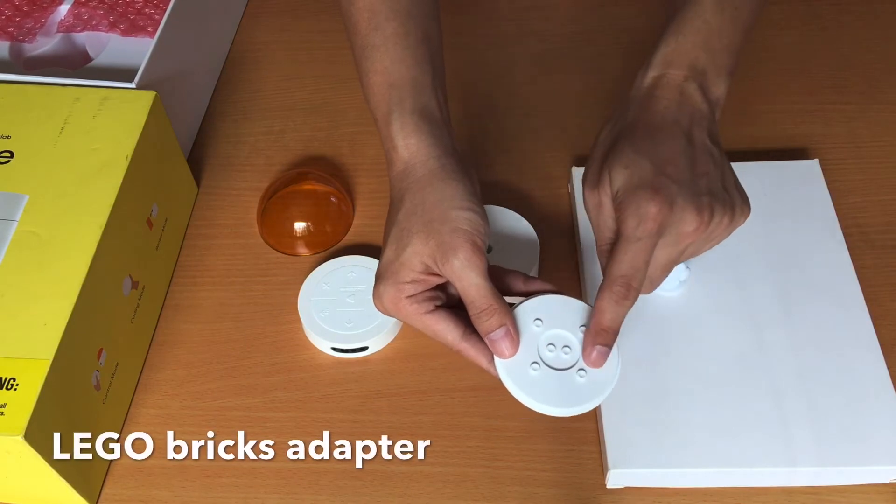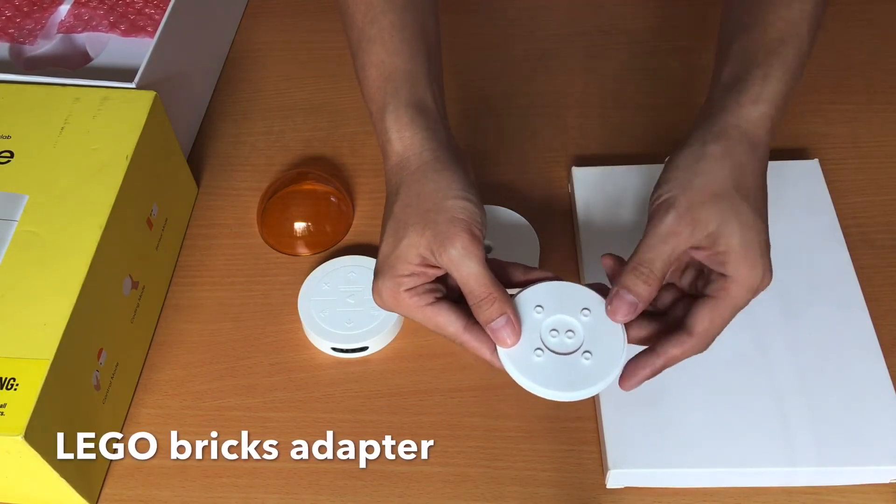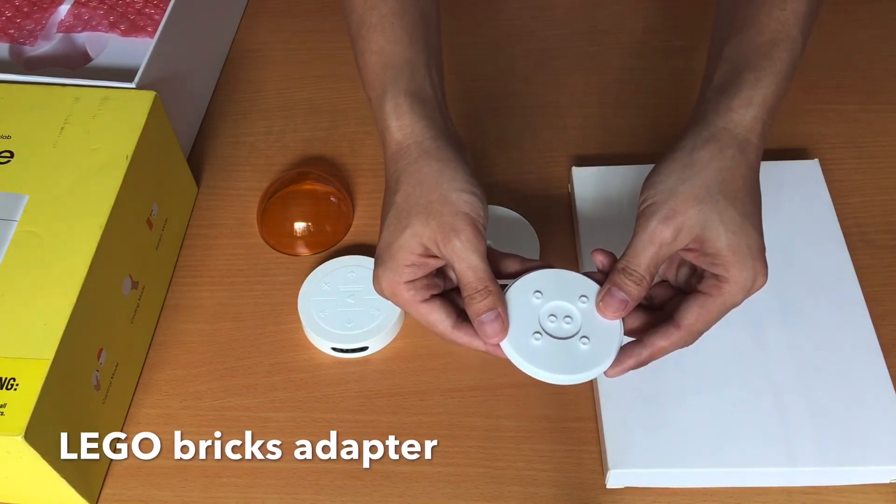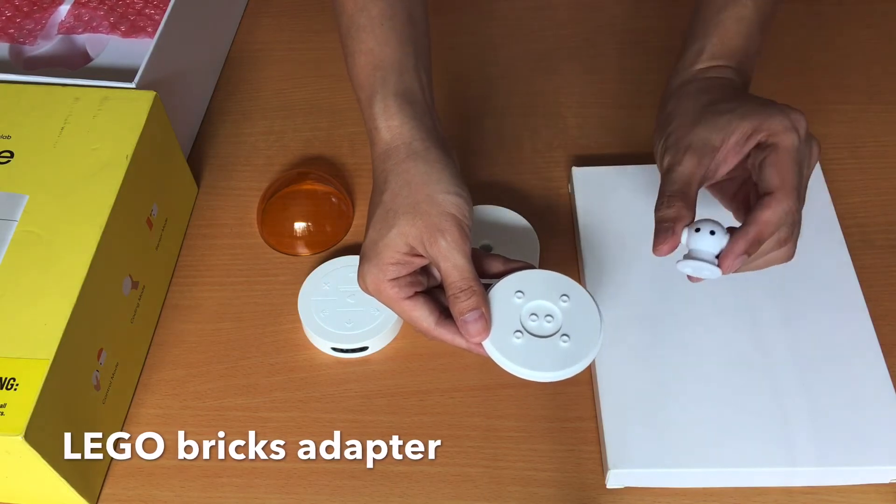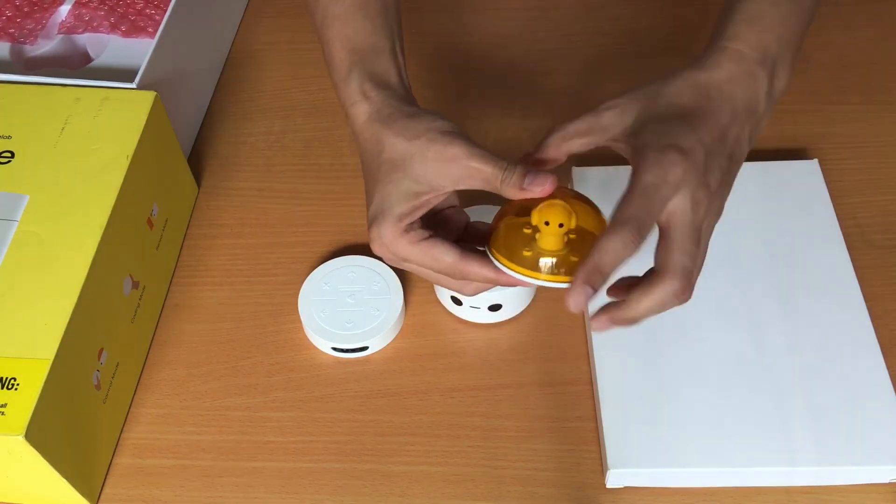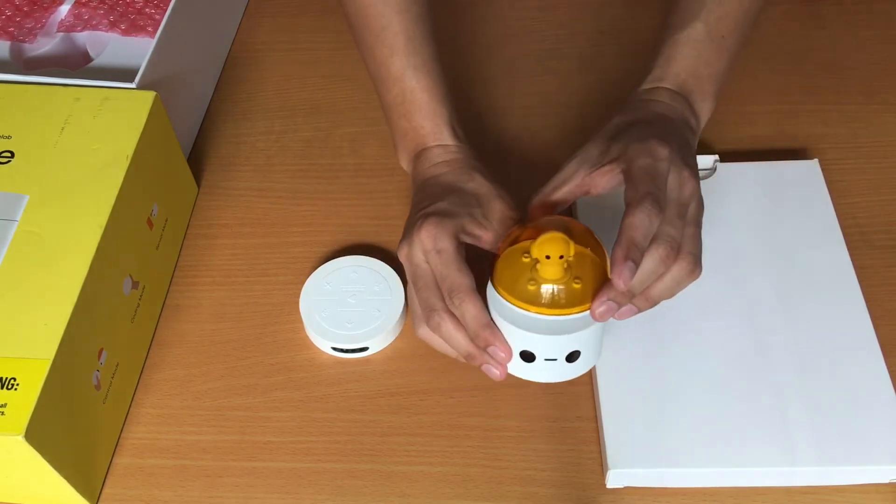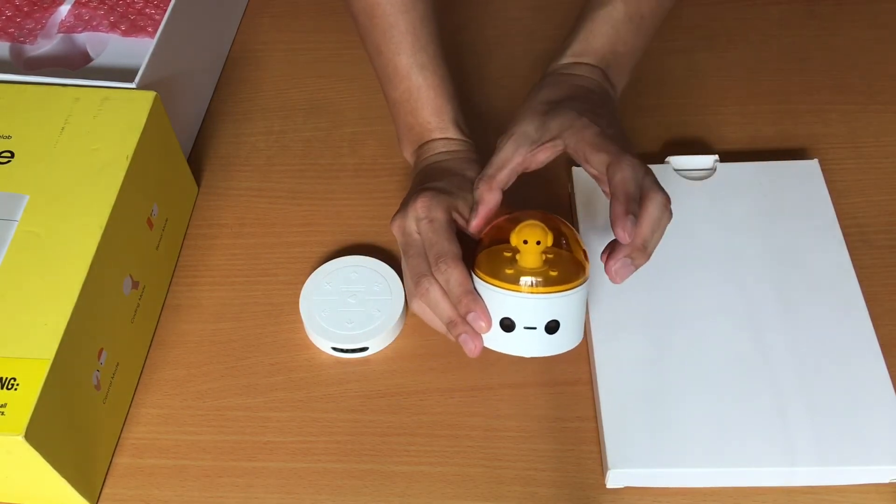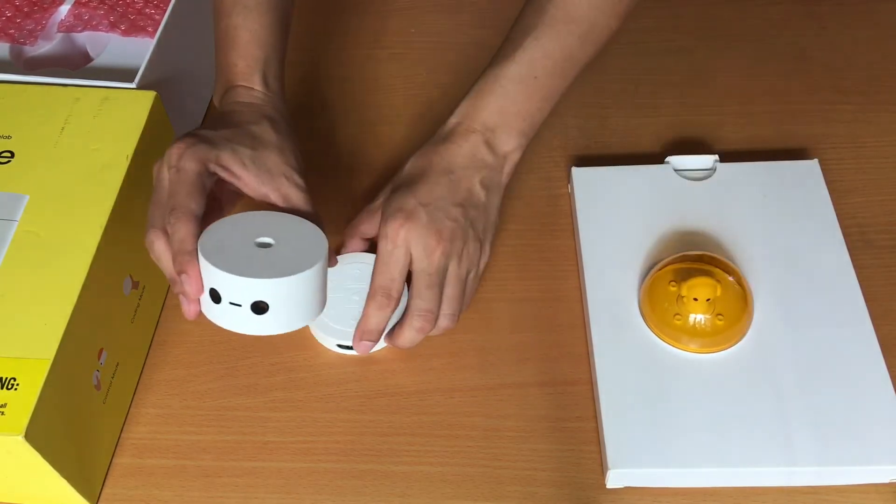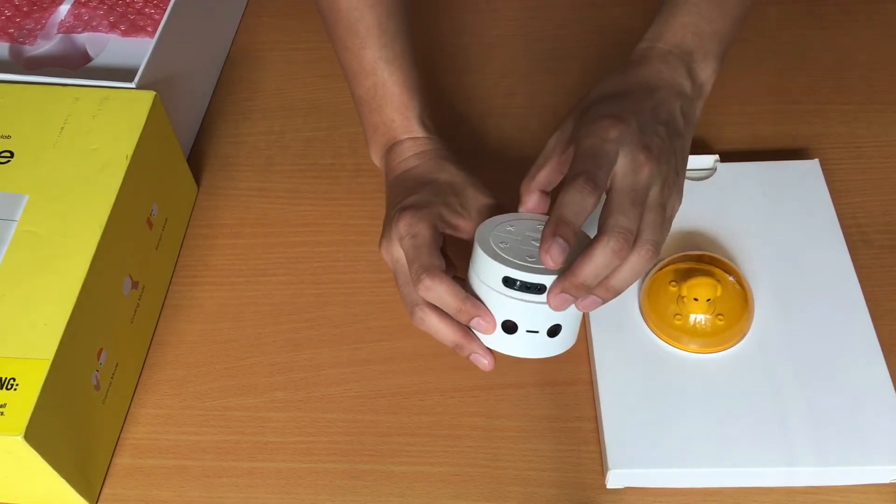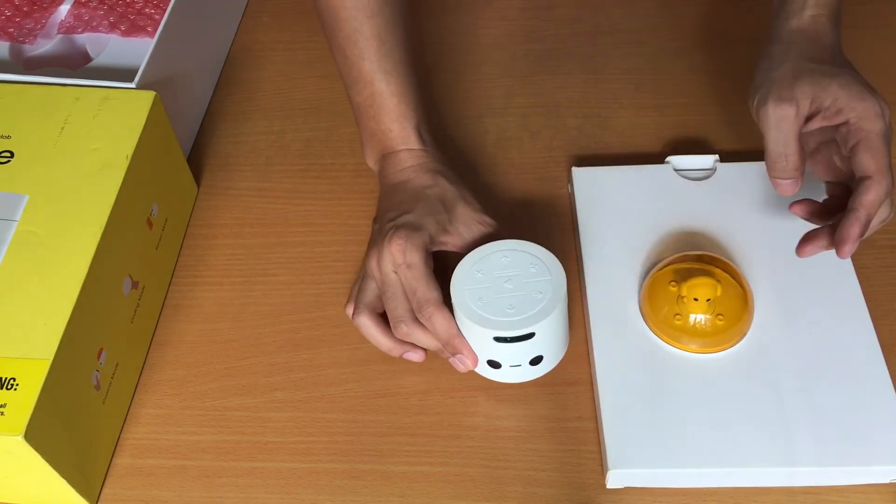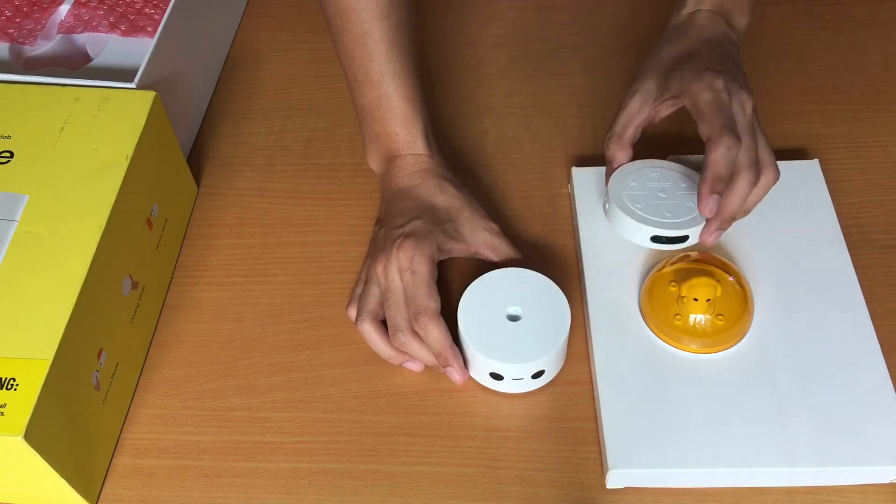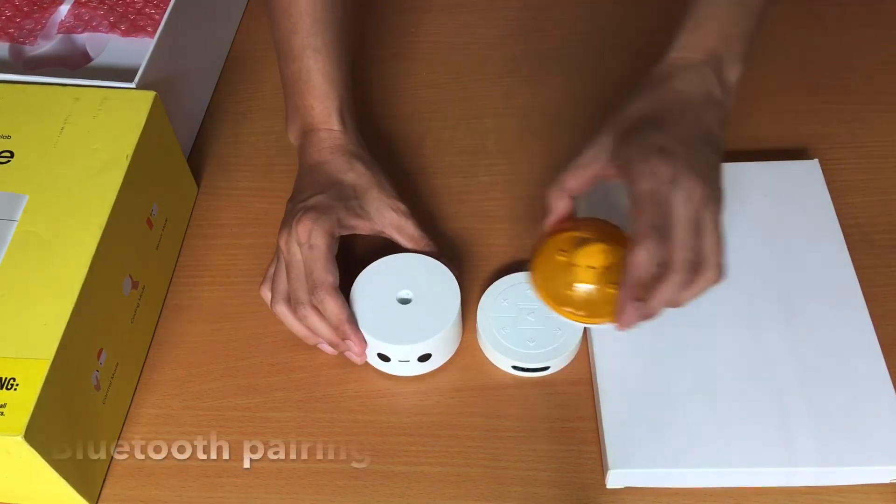This is a Lego bricks adapter which means you can put on your favorite Lego toy as a replacement for this. So let's put it back. And then mount it onto the Matatalabot. You can also mount the controller here to the Matatalabot. Like that. So it's magnetically mounted. The pairing for this is via Bluetooth.